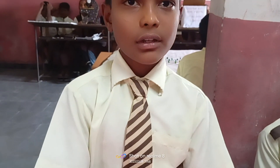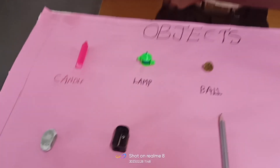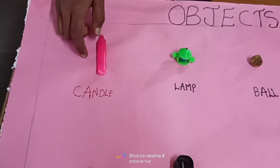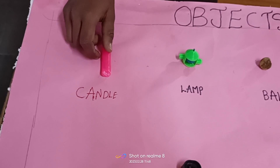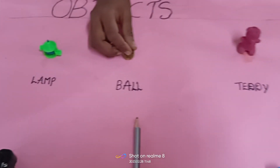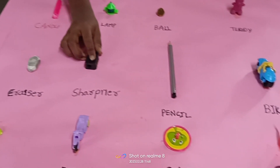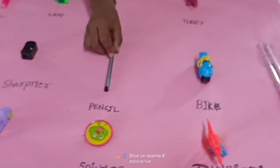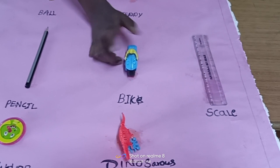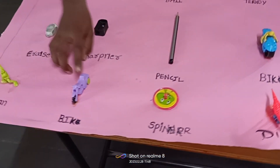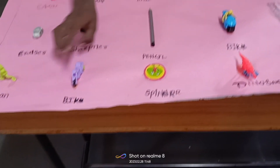Good morning everyone. Welcome to science. My name is Milena Mishari. I am studying in third class. The topic is light. This is a candle. This is a lamp. This is a ball. This is lightning. This is an illusion. This is a chalkboard. This is a pencil. This is a ball. This is a scale.